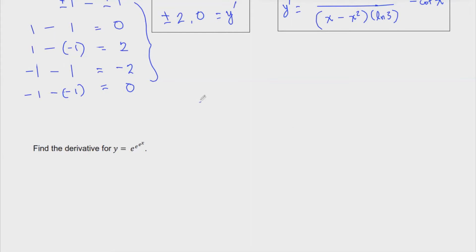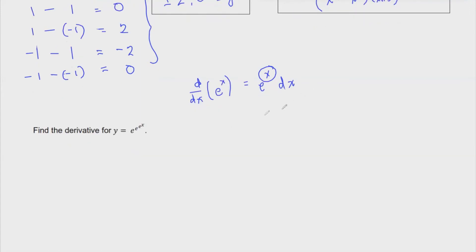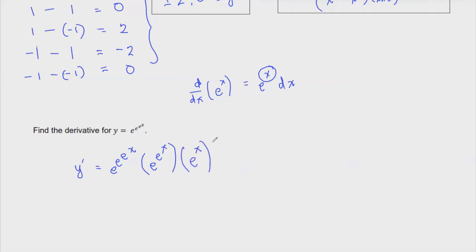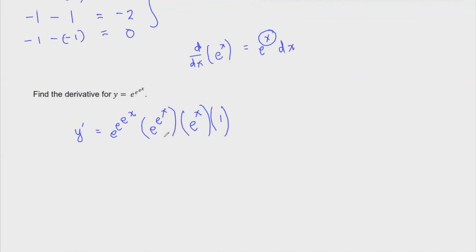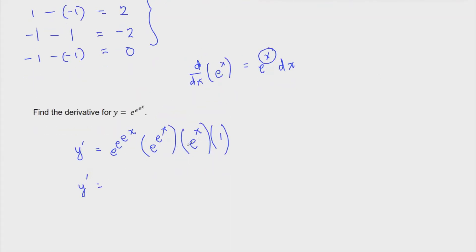Remember, when we take the derivative of e to the x, this is simply e to the x times dx. It's just like you copy the expression and then differentiate the exponent. So if it's e raised to a certain power, copy whatever it is. That's e raised to e raised to e raised to x, and then differentiate e raised to e raised to x. We copy it again — e raised to e raised to x — and then differentiate the remaining e to the x, copying it, and the derivative of x is simply one.